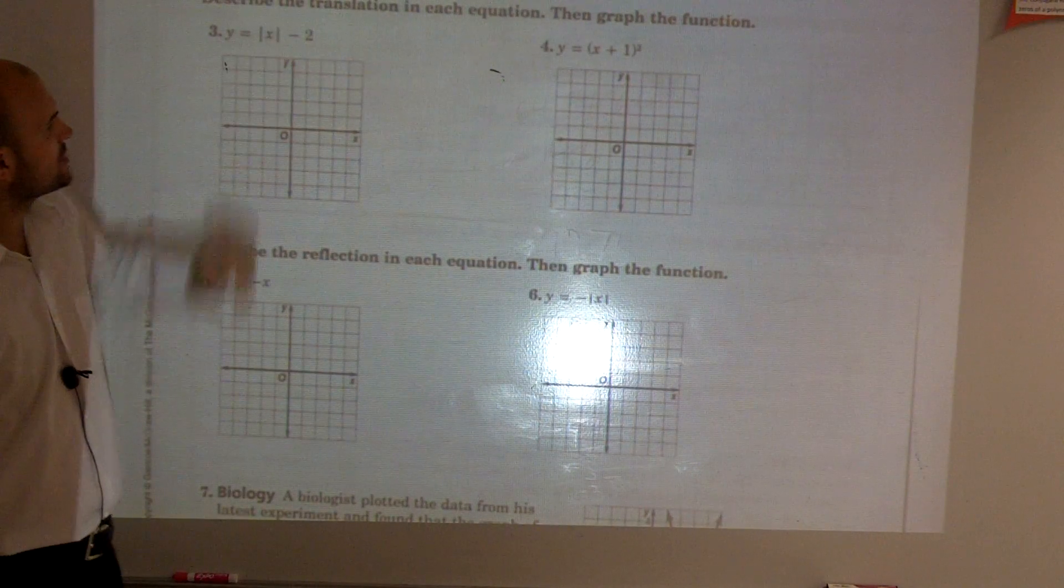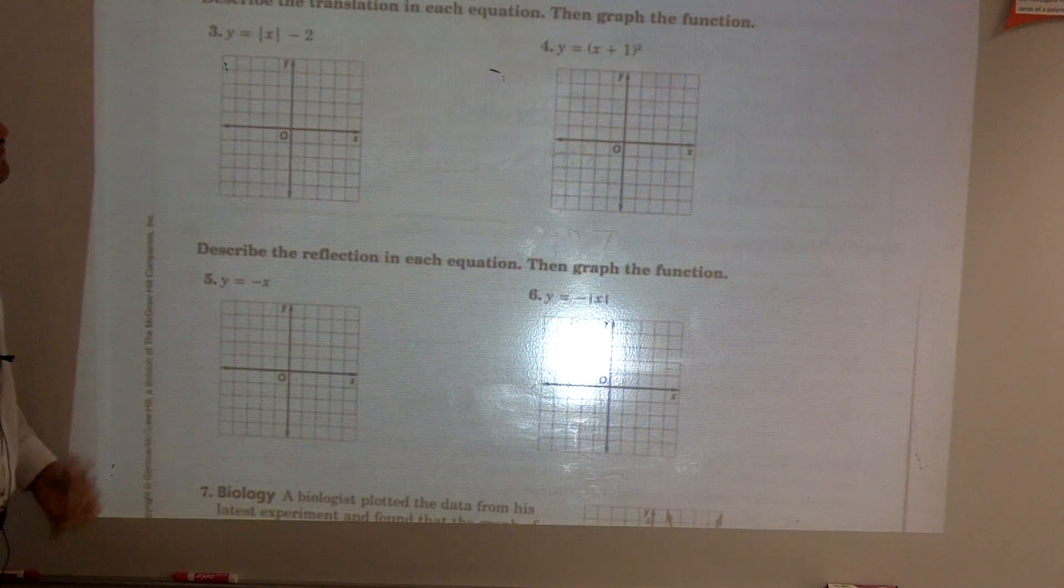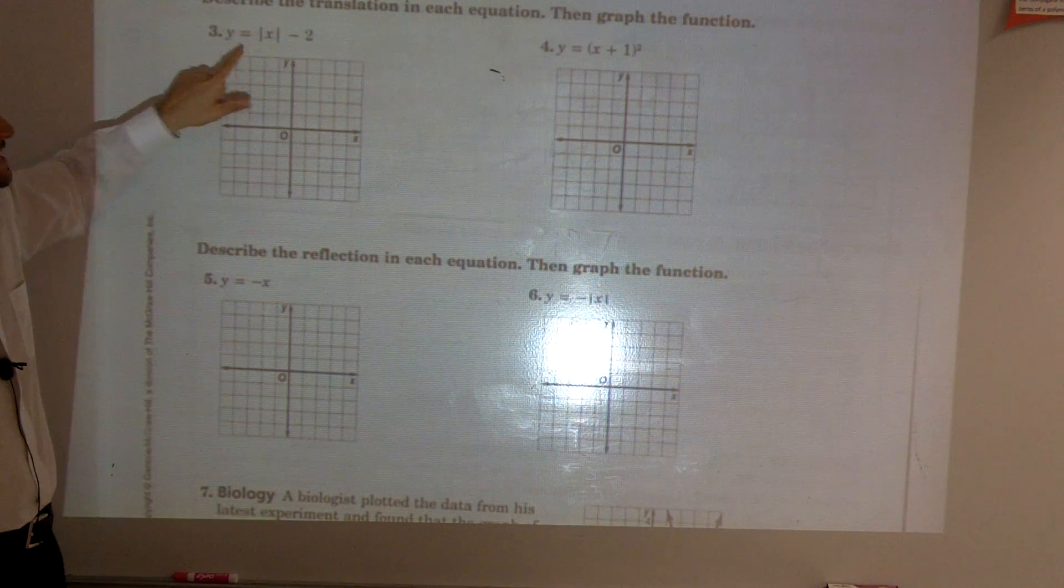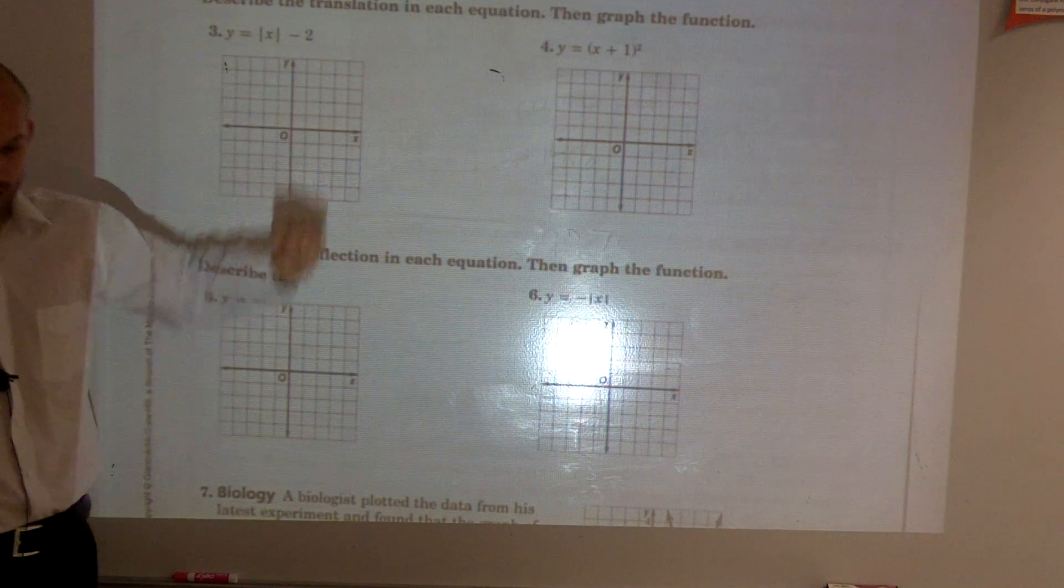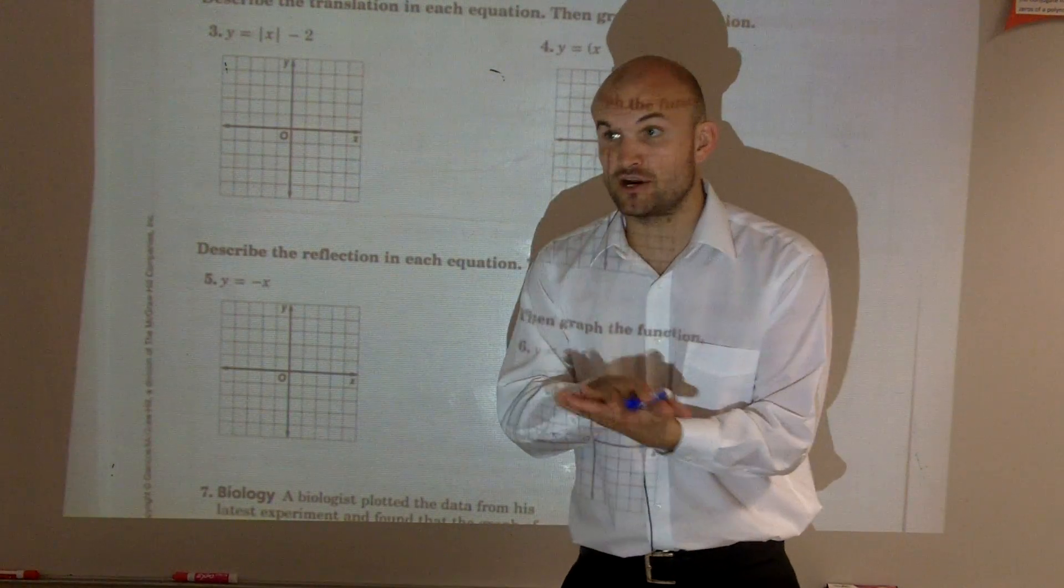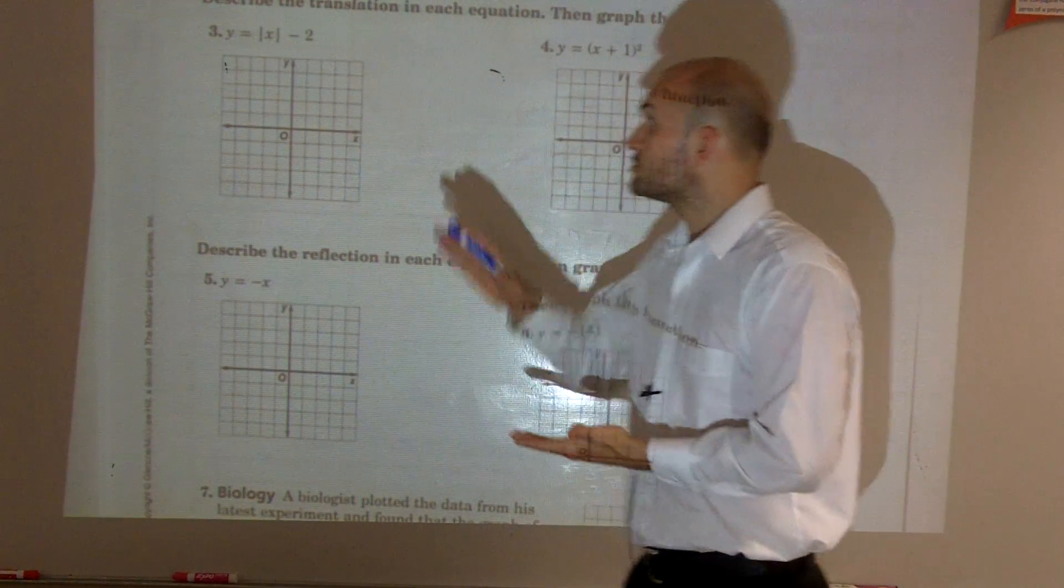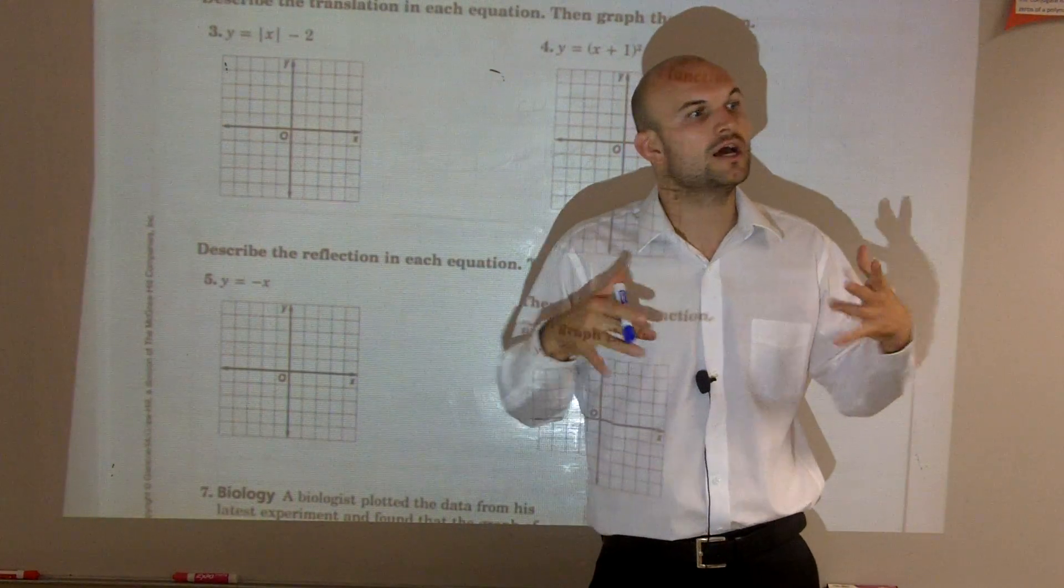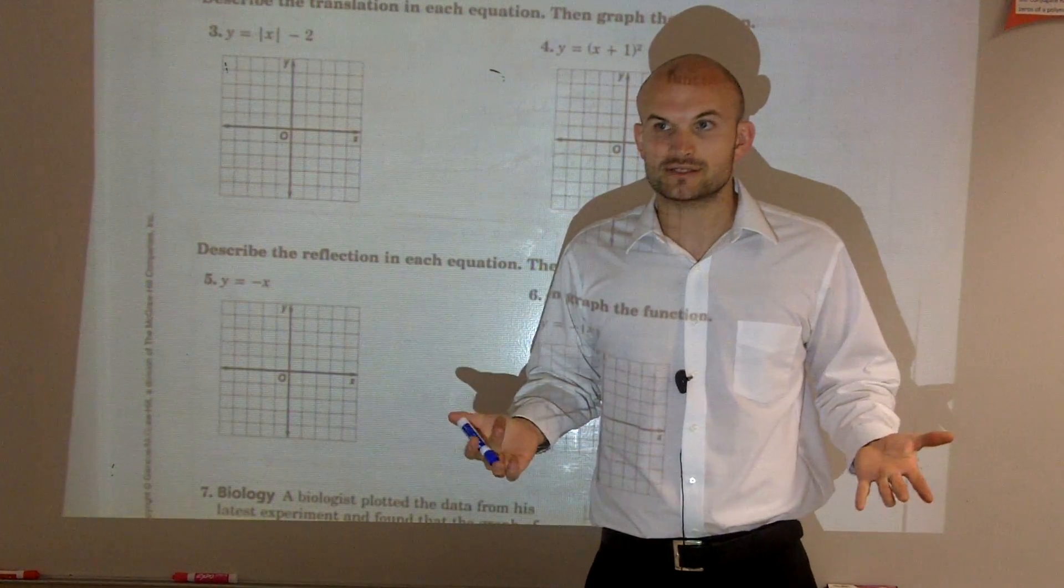So what I want you guys to do is describe the translation in each equation, then graph the function. So first of all, ladies and gentlemen, this function is y equals absolute value of x minus 2. Remember in our notes, we talked about parent functions. So what we need to do for number three is when you're trying to understand the translation, you need to know what the parent function is.